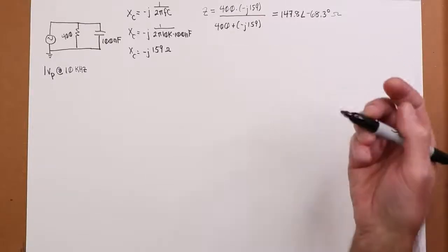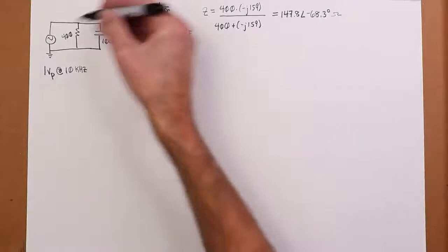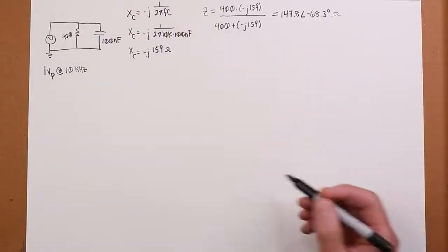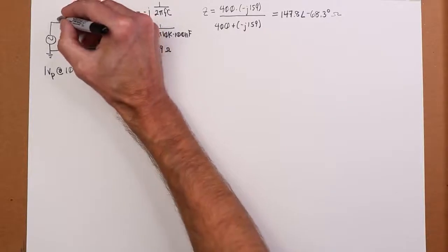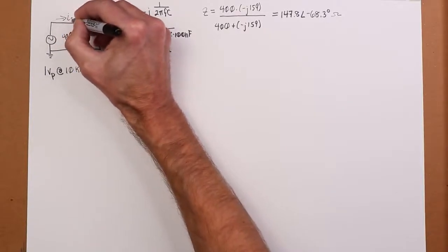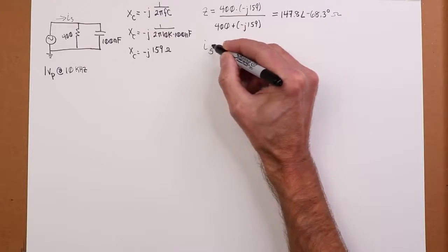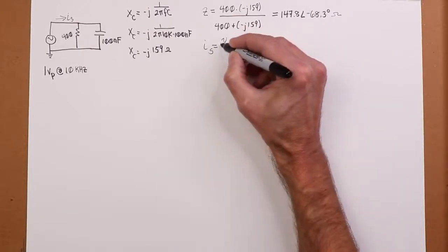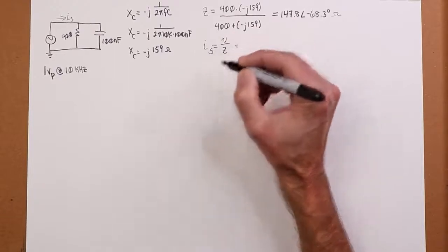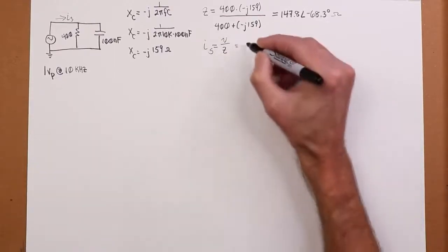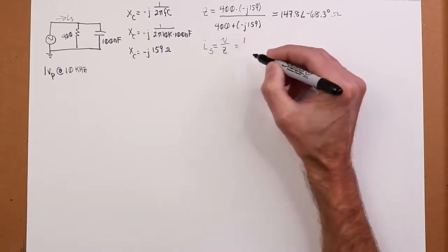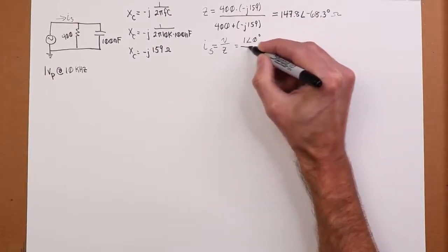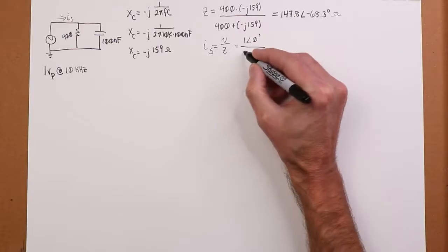Now once we know this total Z, this whole thing looks like 147.8 at negative 68.3 degrees, we could find out what the source current is. What's IS? So we can just use Ohm's law on that. That's going to be voltage divided by impedance. And we just said we're going to use this as our reference, one volt peak. So it's going to be one at an angle of zero,